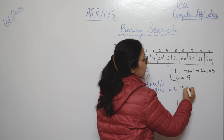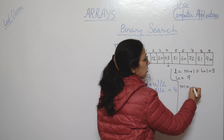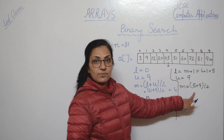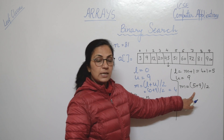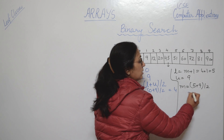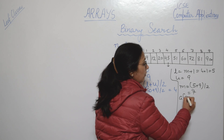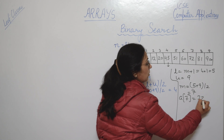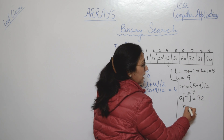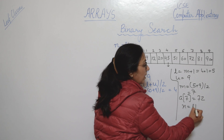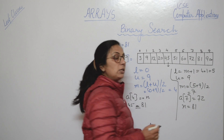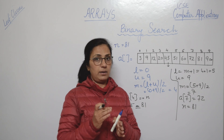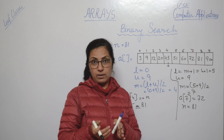Now we find the new mid value: lower plus upper by 2 = 5 + 9 / 2 = 7. So we check A[7], which is 72. The number we want to search is 81. 72 is not equal to 81, and since the array is sorted, 81 cannot be before position 7 either.